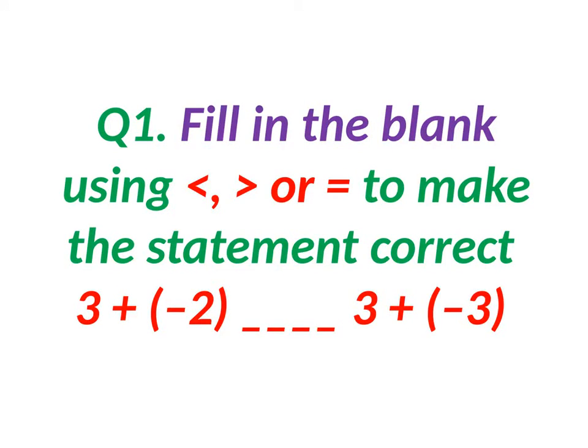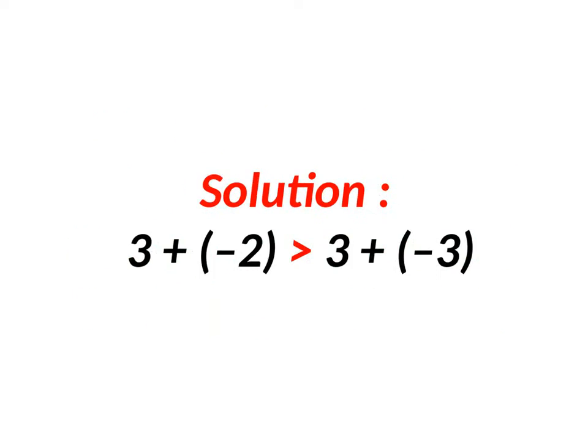Let us see a problem: 3 plus minus 2 or 3 plus minus 3, which is greater? Here, 3 plus minus 2 is greater because 3 plus minus 2 is 1, and 3 plus minus 3 is 0. So 1 is greater than 0. Let us see another sum.